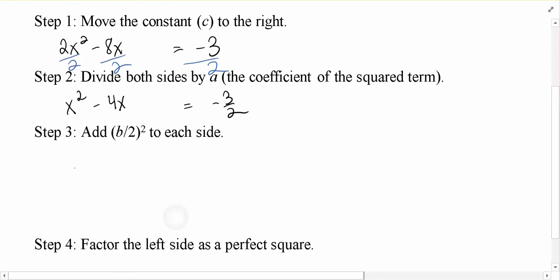Now we use our magic number idea. So our magic number in this case is to take our middle coefficient of -4, divide by 2, and then square it. That gets us (-2)² or 4.